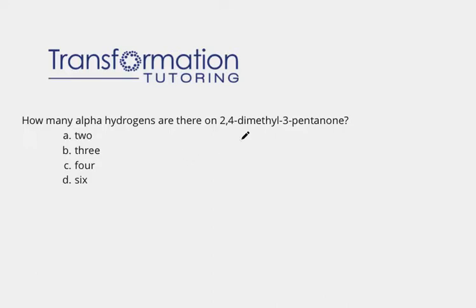First, let's go ahead and draw out this molecule to see what it looks like so that we can answer this question correctly. We can see that our parent chain is pent, which means we have 5 carbons. So let's start by drawing 5 carbons and numbering them: 1, 2, 3, 4, 5.